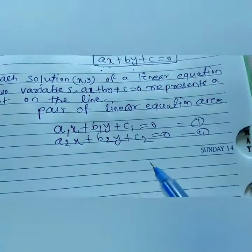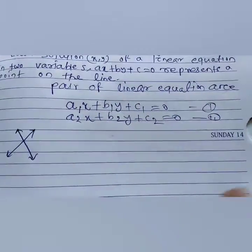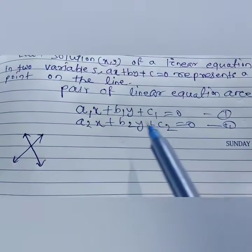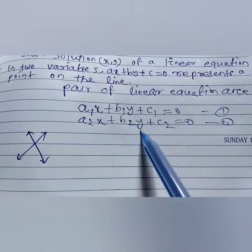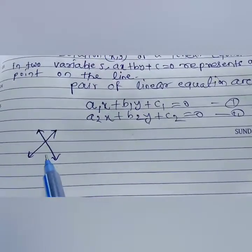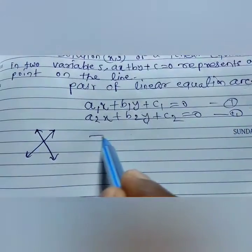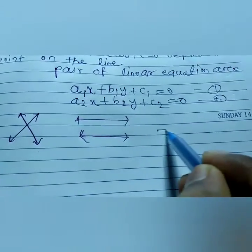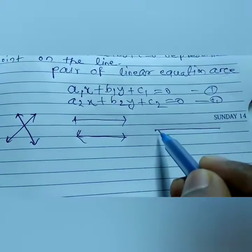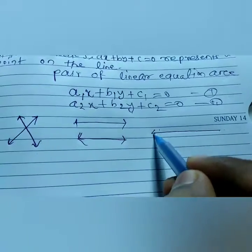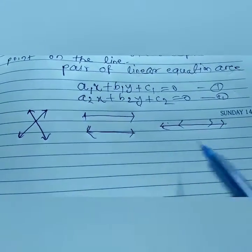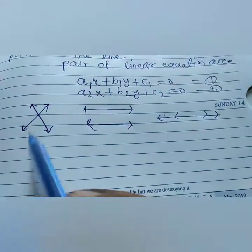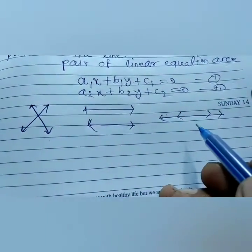These two equations are known as a pair of linear equations. These equations always draw a line — this is the equation for a line. So the two equations can intersect, or can be parallel, or can overlap each other — coincident. These are the three conditions that two equations can satisfy: intersecting, parallel, and coincident.